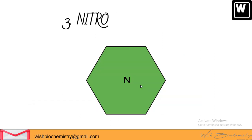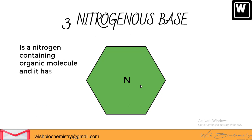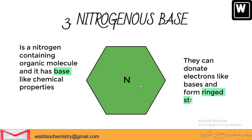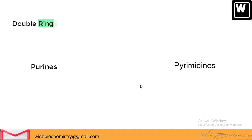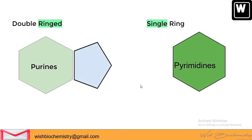Next is the nitrogenous base. It is a nitrogen-containing organic molecule where nitrogen bonds with carbon, hydrogen, and oxygen to form ring-like structures. It has base-like properties as it can donate electrons, hence the name nitrogenous base. Bases can be of two different types: double-ringed and single-ringed. Single rings are called pyrimidines and double rings are called purines.